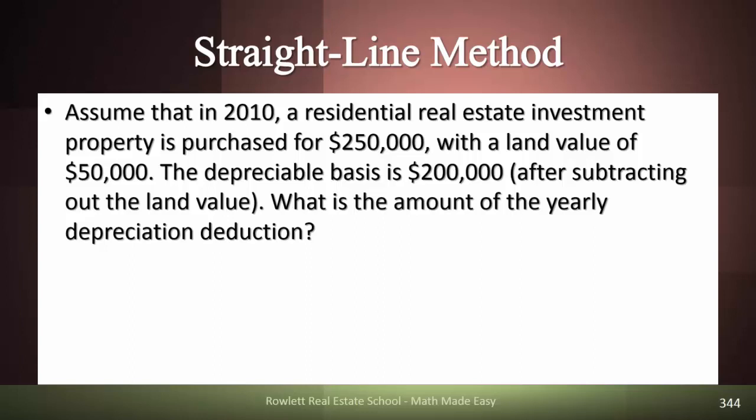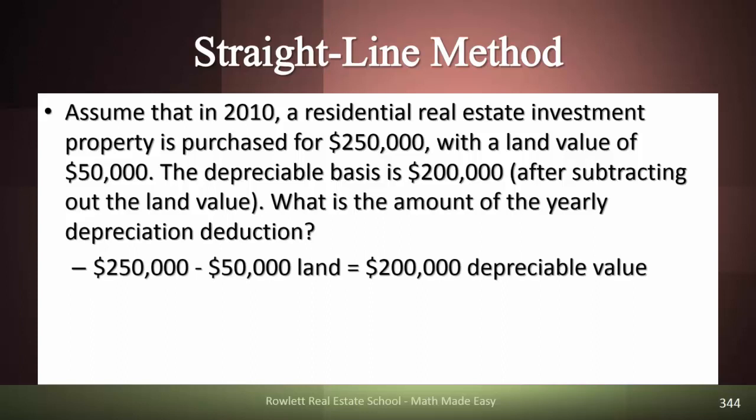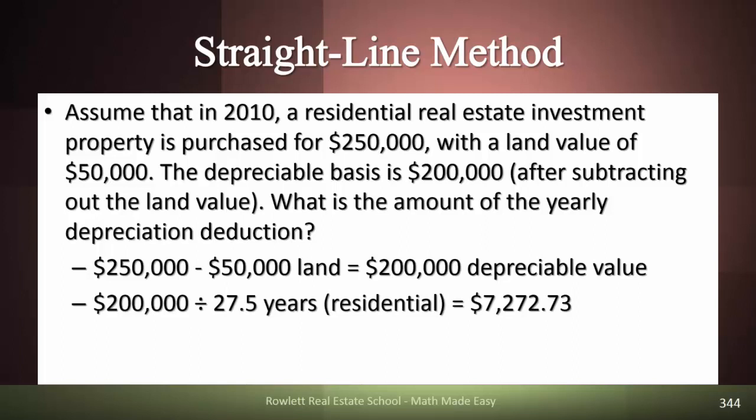It was purchased for $250,000 but the land was valued at $50,000. We take out the value of the dirt and what's left is the depreciable amount of $200,000. So, once we have that $200,000, we divide it by the appropriate number of years. Since it's a residential real estate investment, we divide the $200,000 by 27.5, and that tells us that every year this property for tax purposes will lose $7,272.73 worth of value.